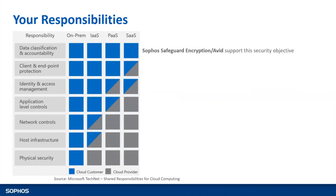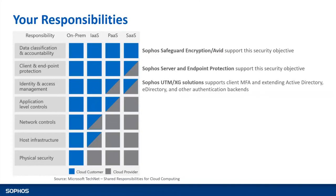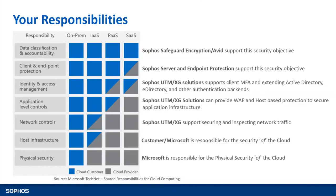Moving further, here is what we can provide to customers. Sophos SafeGuard is the Sophos encryption product — a security solution for data classification and accountability that can be encrypted. We have Sophos server and endpoint protection for complete security, and Sophos UTM/XG. At different layers of security, we provide different products to help you gain visibility and control of your network. Today's topic is more about cloud optics and what we do best with it.